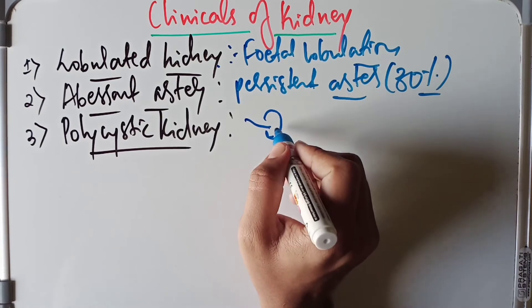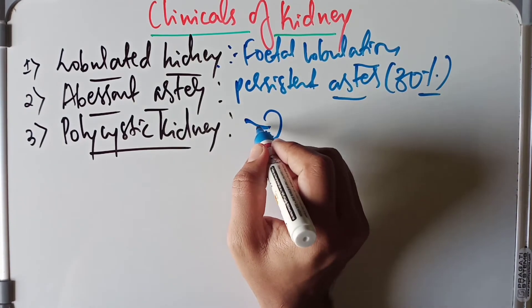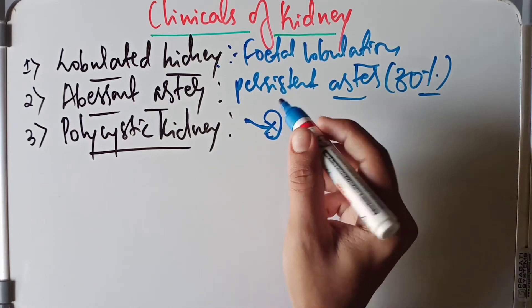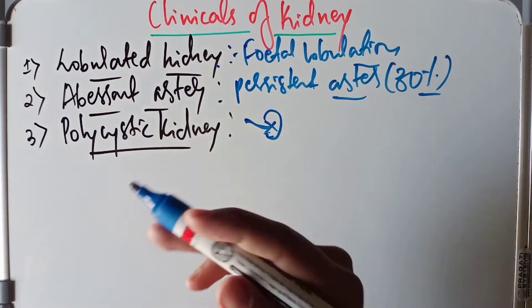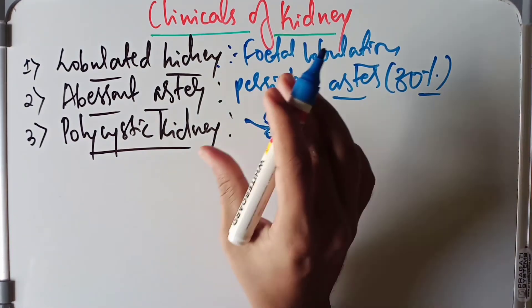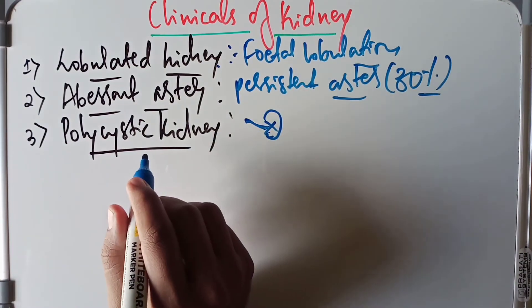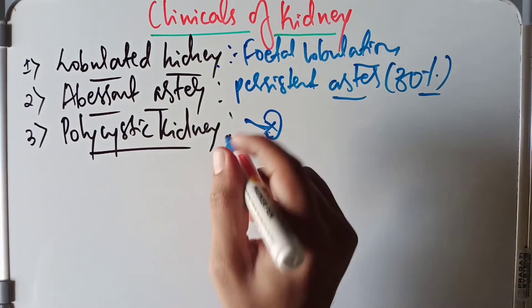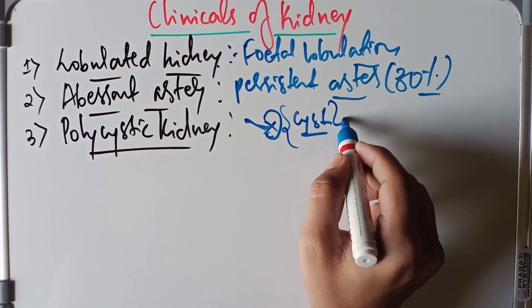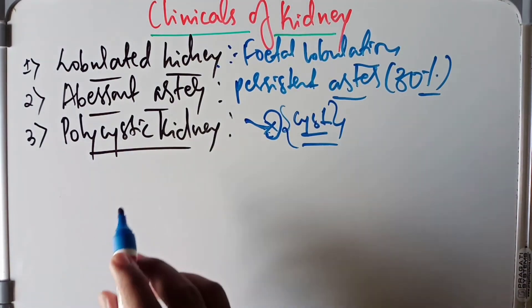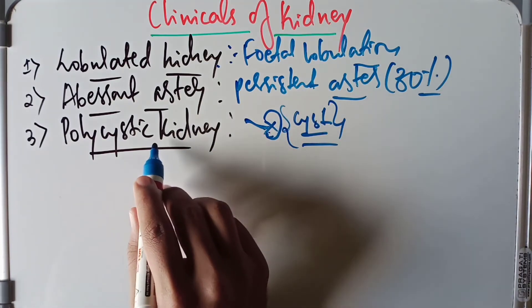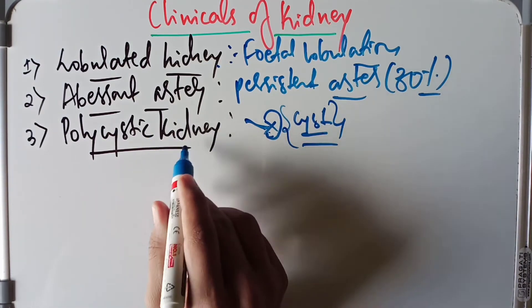The metanephric cap forms the excretory system and the ureteric bud forms the collecting system — these two should join. If they fail to join, the glomeruli will continue to excrete urine but that urine does not reach the collecting system. The excreted urine accumulates in the tubules, and due to lack of outlet these grow into cysts. This continuous cyst formation results in the polycystic kidney — the tubules undergo cystic enlargement.